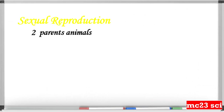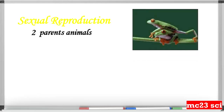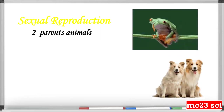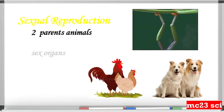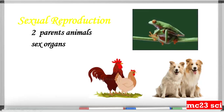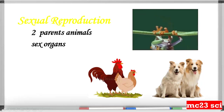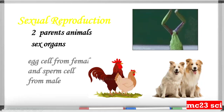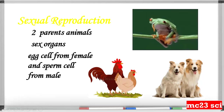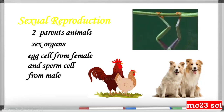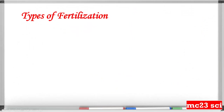In sexual reproduction, it needs two parent animals, like frogs, dogs, and chicken. The parent animals have sex organs, where the egg cells come from the female and the sperm cell comes from the male animal.